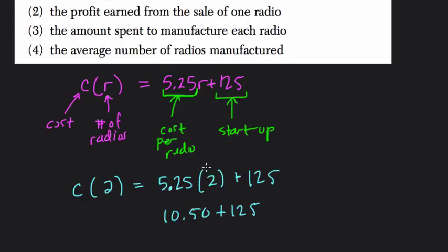So notice we plug in 2 for the number of radios, and that means that it costs $10.50 for 2 of them. They're each $5.25, and we add the startup cost. So the total cost of producing 2 radios is $135.50. So just to establish what happened here. Again, $125 is the startup, right? That's something we agree on. $5.25 is the cost per radio.